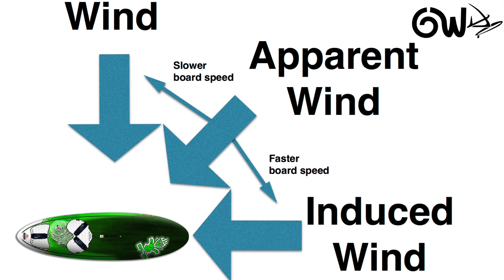When the board has less speed, the induced wind will be less, which will make the apparent wind feel closer to the actual wind. The faster the board is going, the more induced wind you will feel, so the apparent wind will feel like it is closer to the induced wind.